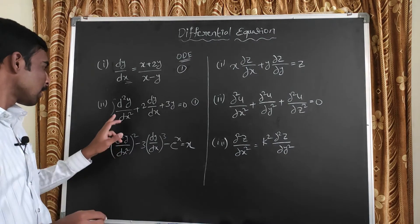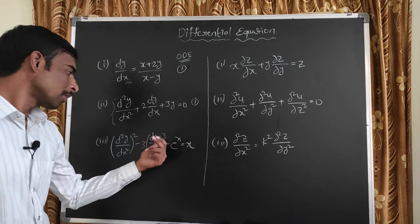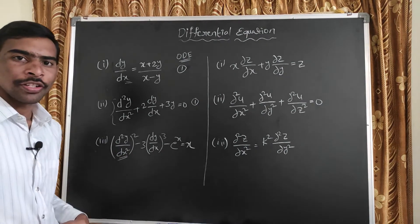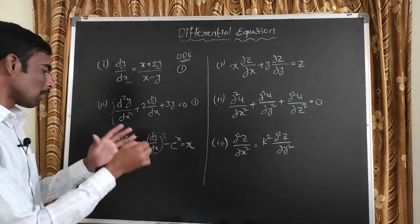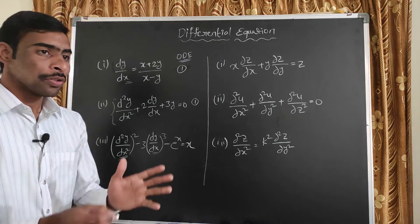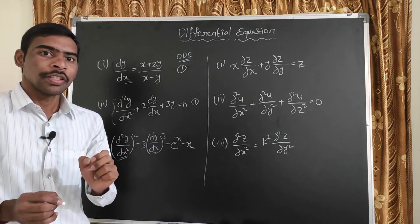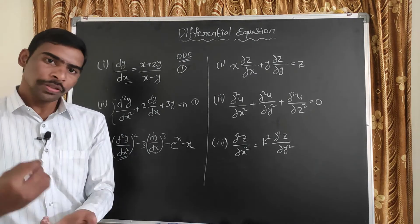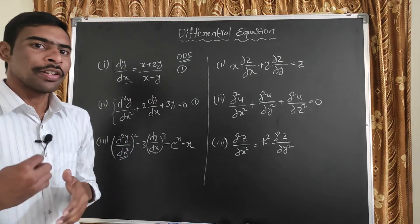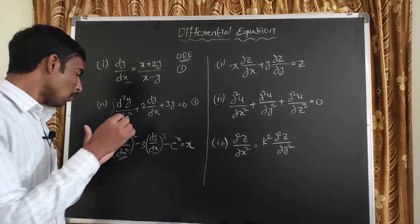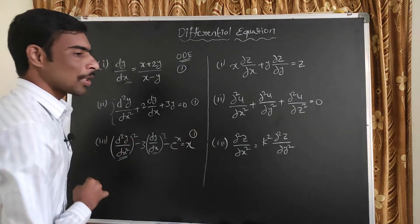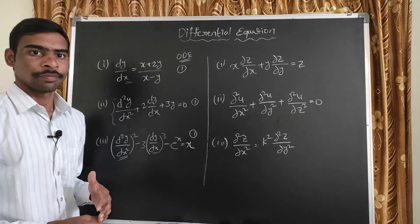Double-time derivation gives a square, single-time derivation gives linear terms. We can differentiate with x any number of times — only one independent variable x is used. So this is an ordinary differential equation.